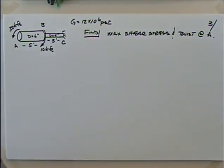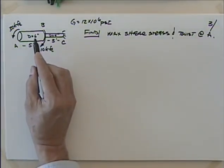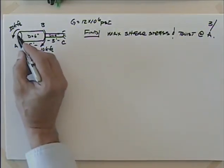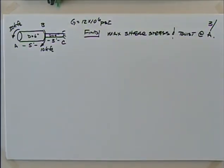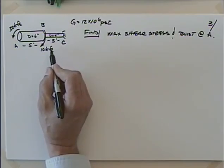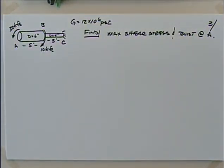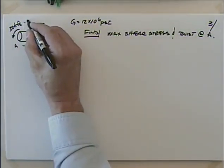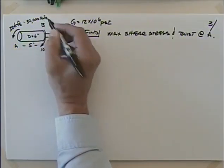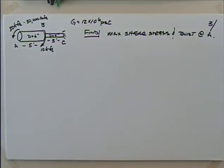Here's the example: we have a shaft built out of two sections — a 6-inch diameter section that's 5 feet long, and a 4-inch diameter section that's 3 feet long. Applied to the free end A is 30,000 pound-feet of torque, and at point B is 10,000 pound-feet of torque. We want to find the maximum shear stress in each section and the angle of twist at free end A.